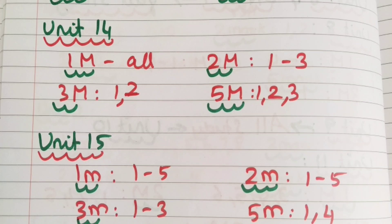Unit 15 is added. 1 mark — learn the length. 2 mark is 1 in length. 3 mark short answer — 1 and 3. 5 mark long answer — 1 and 4.